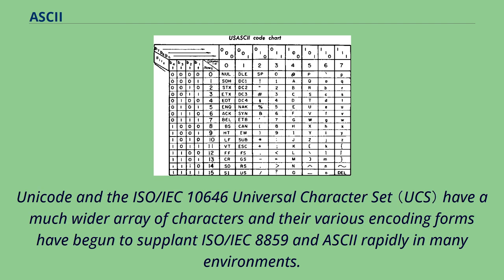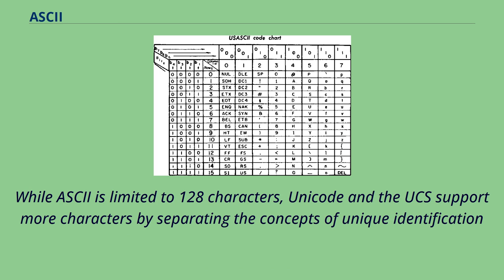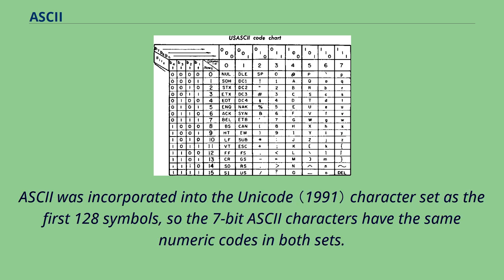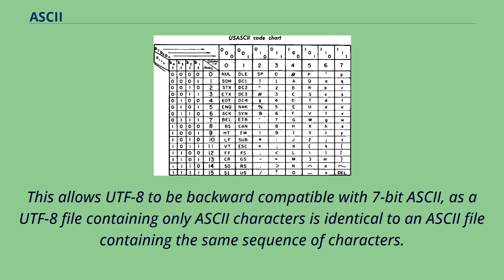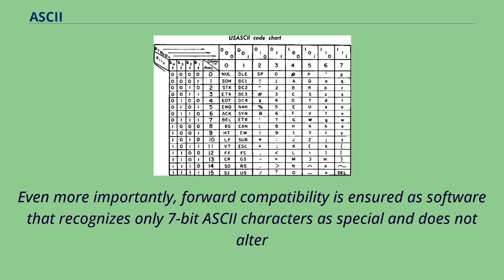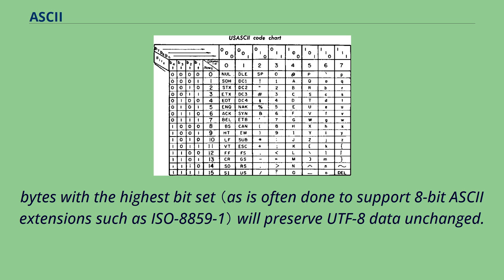Unicode and the ISO/IEC 10646 universal character set have a much wider array of characters, and their various encoding forms have begun to supplant ISO/IEC 8859 and ASCII rapidly in many environments. While ASCII is limited to 128 characters, Unicode and the UCS support more characters by separating the concepts of unique identification and encoding. ASCII was incorporated into the Unicode character set as the first 128 symbols, so the 7-bit ASCII characters have the same numeric codes in both sets. This allows UTF-8 to be backward compatible with 7-bit ASCII, as a UTF-8 file containing only ASCII characters is identical to an ASCII file containing the same sequence of characters. Forward compatibility is ensured as software that recognizes only 7-bit ASCII characters as special and does not alter bytes with the highest bit set will preserve UTF-8 data unchanged.